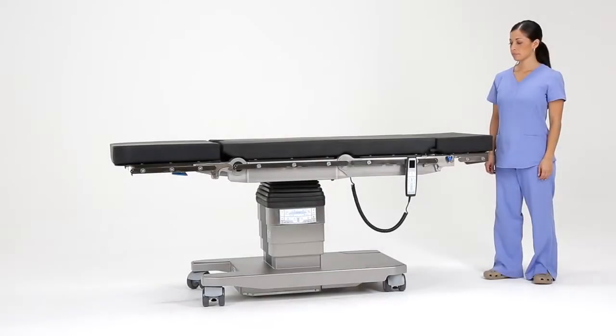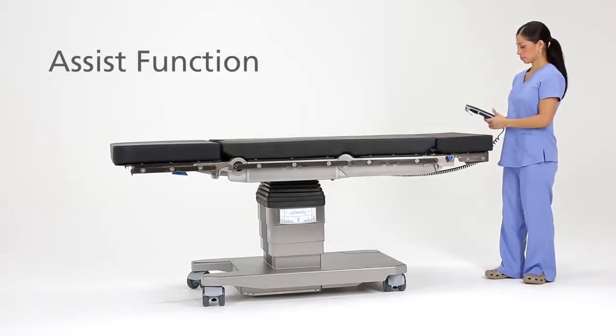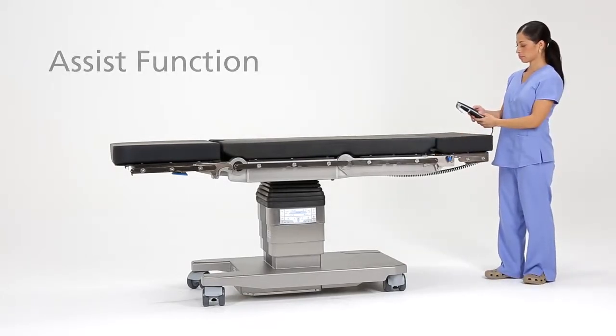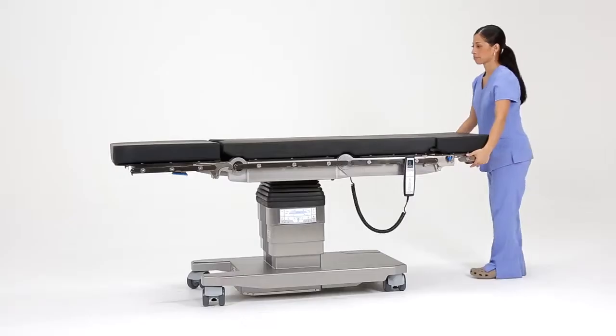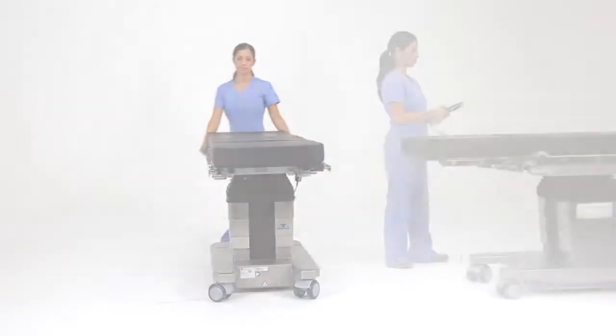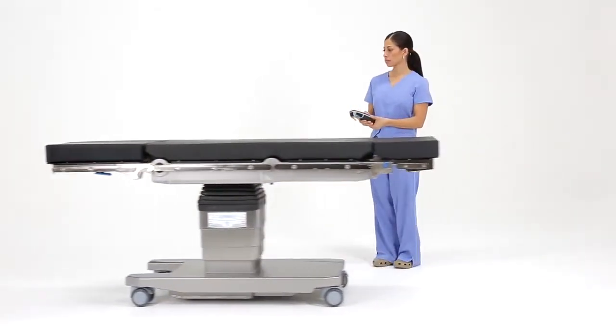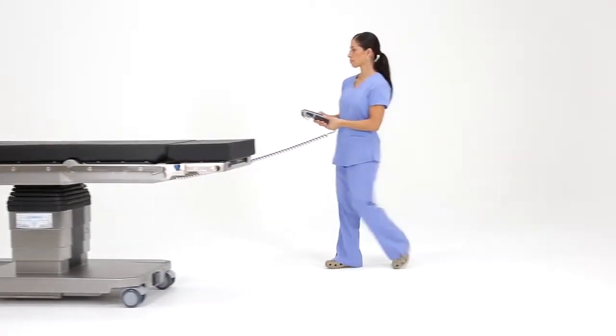The TruSystem 7000's unique fifth wheel increases mobility by enabling the clinician to easily maneuver the table safely while transporting it inside and outside of the OR. It also allows surgical team members to easily rotate and reorient the table for certain procedures. As an optional feature, the fifth wheel can be self-propelled, allowing you to effortlessly drive the table throughout the hospital.